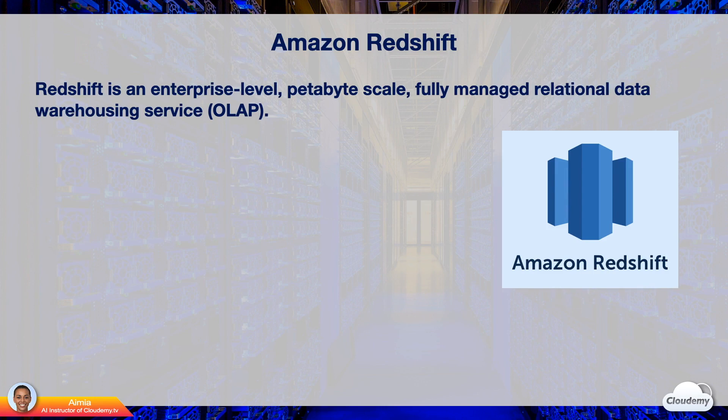Amazon Redshift is an enterprise-level, petabyte-scale, fully managed data warehousing service for online analytical processing. Why do you need a petabyte-scale data warehouse? Imagine you have an online shopping site serving hundreds of thousands of customers. You want to analyze popular products across millions of products — summarizing the most popular products of all time, as well as on a weekly and monthly basis in each category. You will navigate across millions of records and query many tables. Traditional databases are not optimized for complex queries on very large datasets.